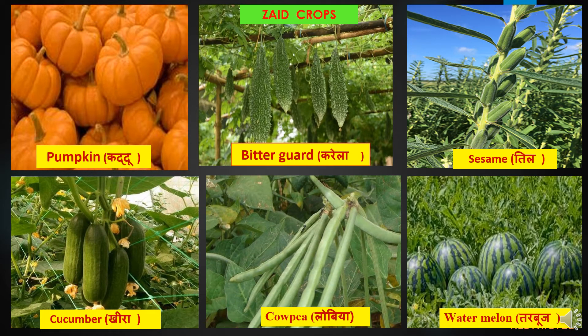Some examples of Zaid crops include pumpkin, bitter gourd, sesame, cucumber, cowpea, and watermelon.